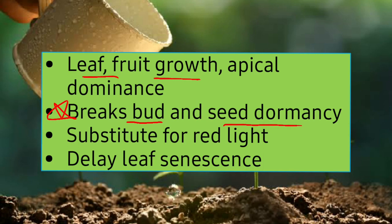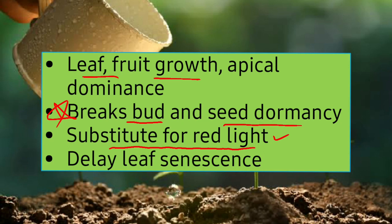An important function unique to gibberellins — not performed by auxins — is that they break bud and seed dormancy. This means gibberellins end the inactive period of buds and seeds, after which growth increases again. They also substitute for red light, meaning plants that require more red light can grow more easily and efficiently with the help of gibberellins. Similar to auxins, gibberellins also delay leaf senescence.